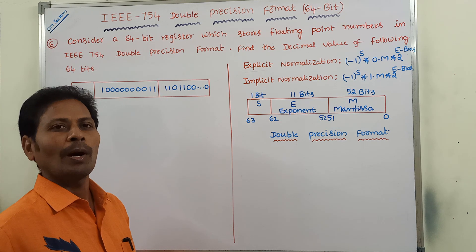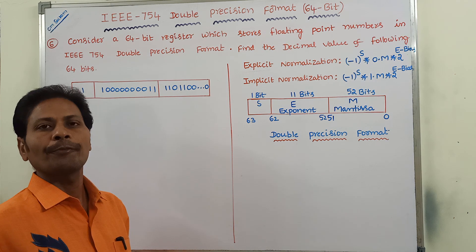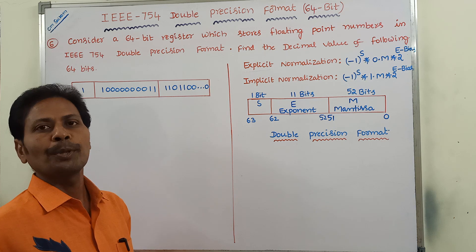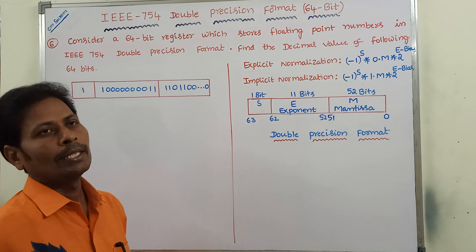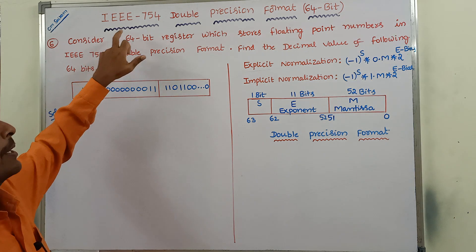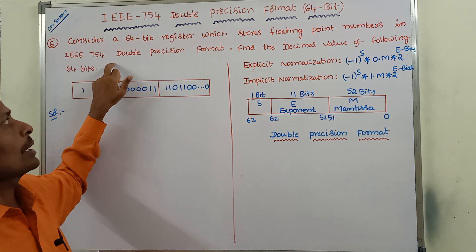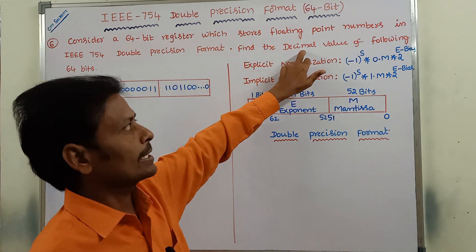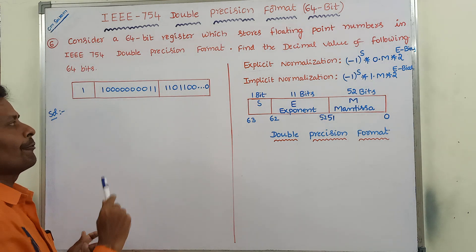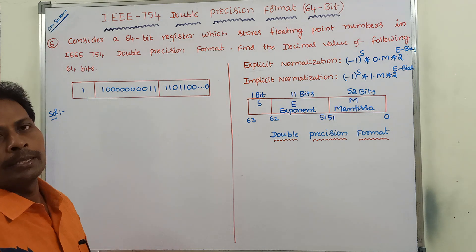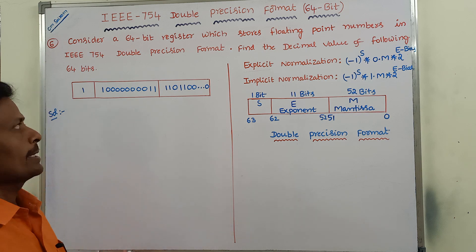Hi friends, welcome back to our YouTube channel. Today we have to discuss an example problem on IEEE 754 double precision format in computer architecture and computer organization course. The given problem is: consider a 64-bit register which stores floating point numbers in IEEE 754 double precision format. Find the decimal value of the following 64 bits. For these given 64 bits in IEEE 754 double precision format, we have to find out the equivalent decimal value.